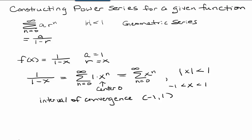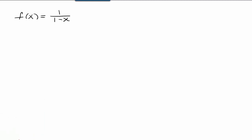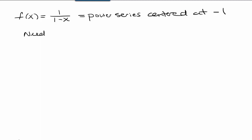Let's suppose that we wanted to obtain a power series for the same function but centered at negative 1. So let's consider the function f of x equals 1 over 1 minus x, and we want to obtain a power series centered at negative 1. Remember what we need is to make it match up with a over 1 minus r. In order for us to have a center at negative 1, we need 1 being added to x. So instead of r being equal to x, r would need to be x plus 1.